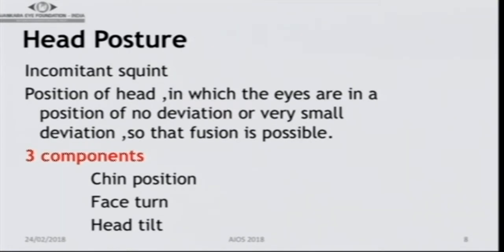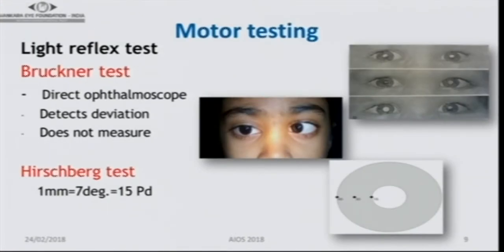Understanding head posture is important — it has three components: chin position, face turn, and head tilt. Head posture is usually seen in paralytic or comitant squint, where the eyes are in a position of minimal deviation so that fusion is possible. For motor testing, the light reflex test depends on the light reflex at the pupillary area. You can use a direct ophthalmoscope to detect a deviation, but it does not measure the angle. Roughly, one millimeter of displacement of this reflex equals 7 degrees or approximately 15 prism diopters.